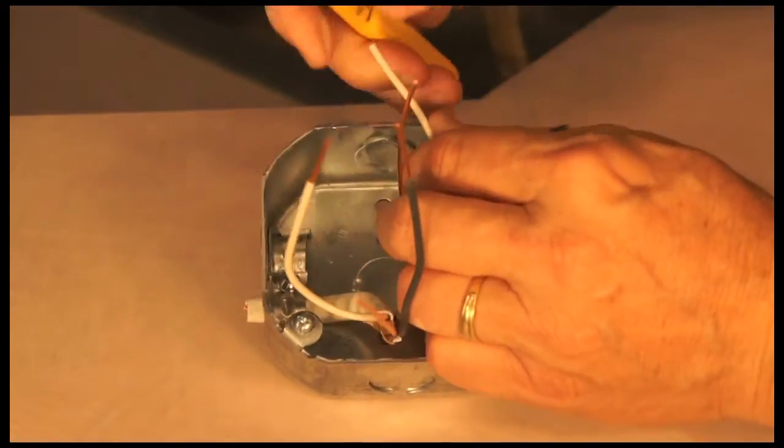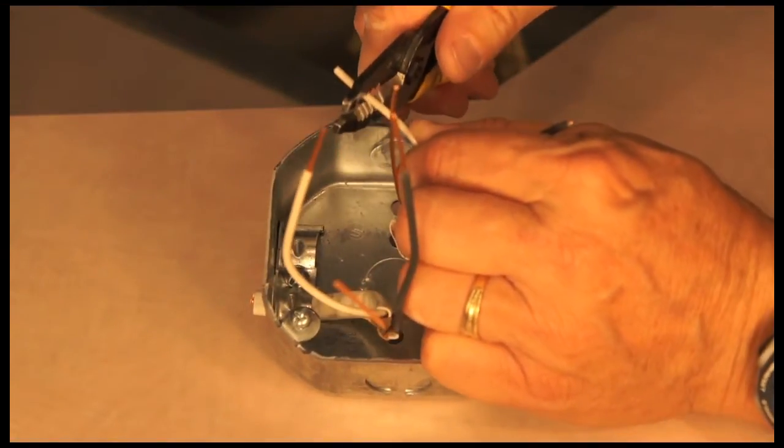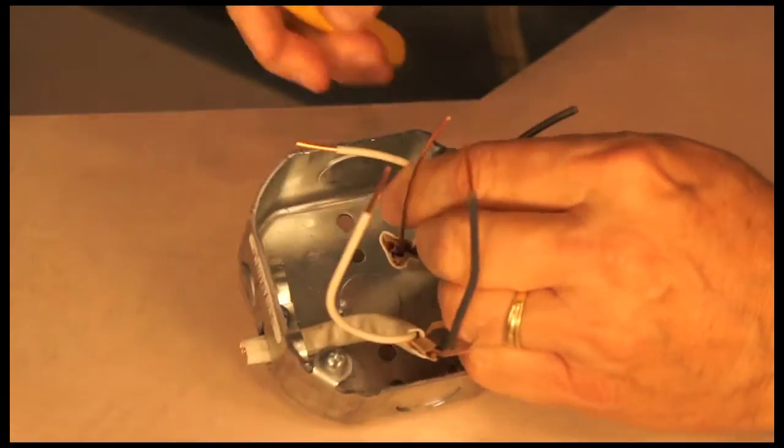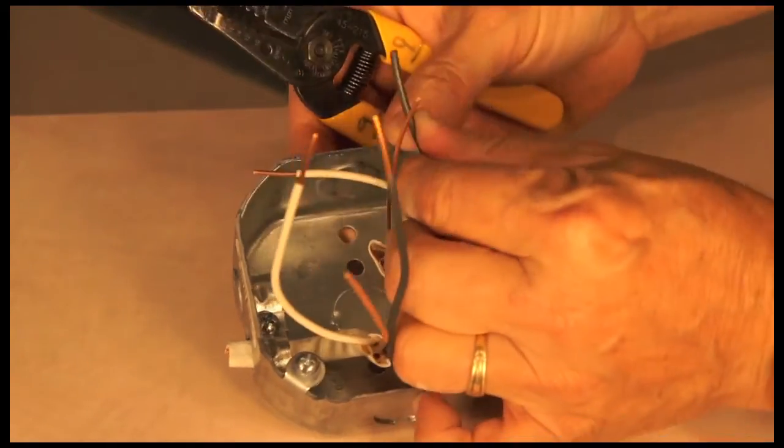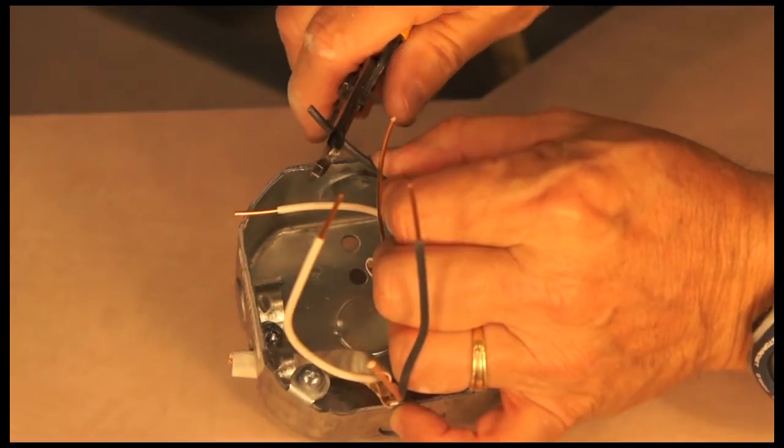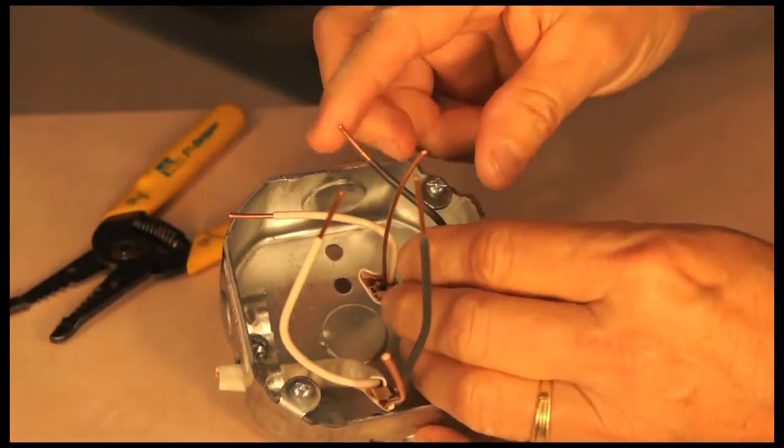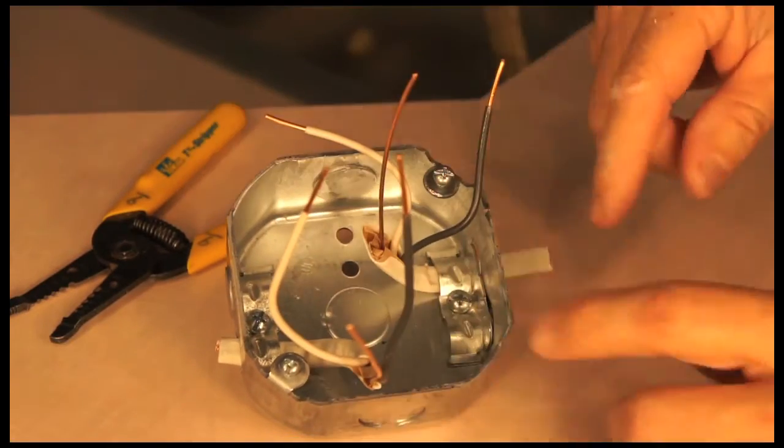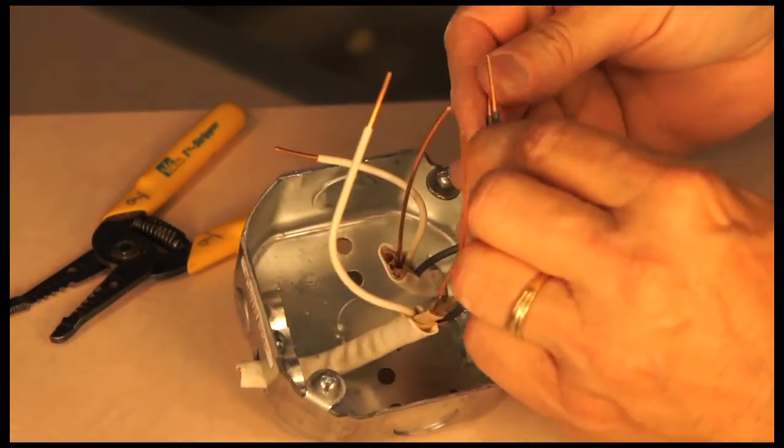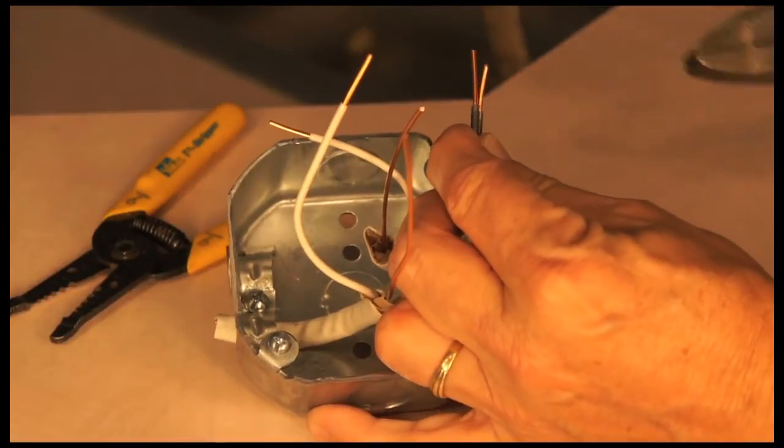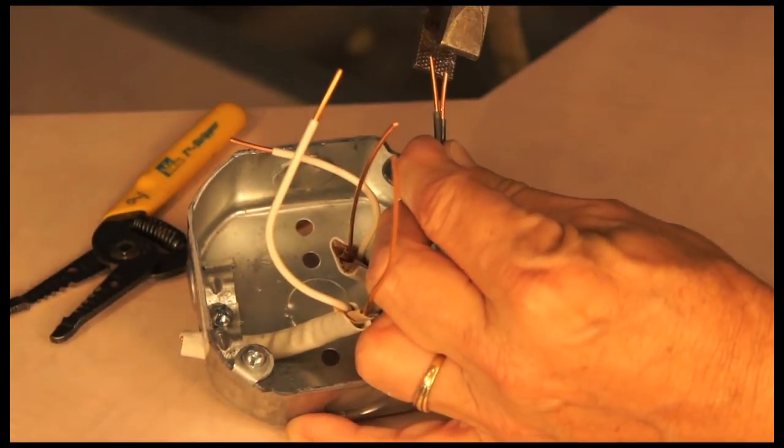So first, I'm going to use my strippers, and I'm going to strip a piece of the neutral, and I'm going to strip a piece of the hot. And again, this is my hot coming in. I want to make a good connection, so that's why I need my side cutters.